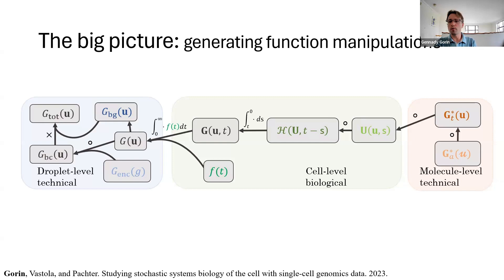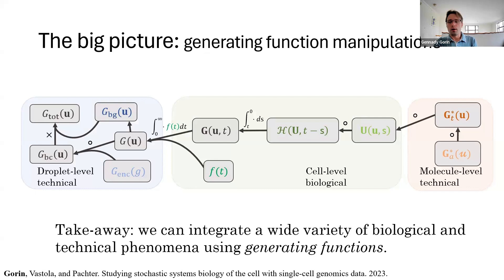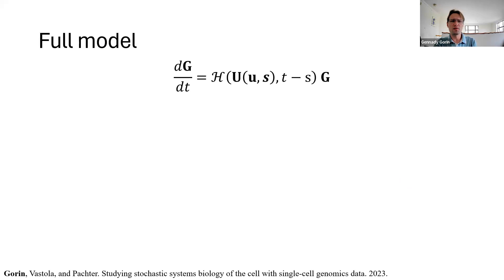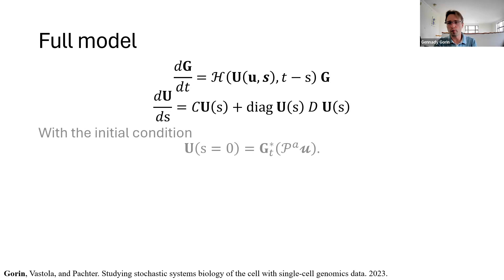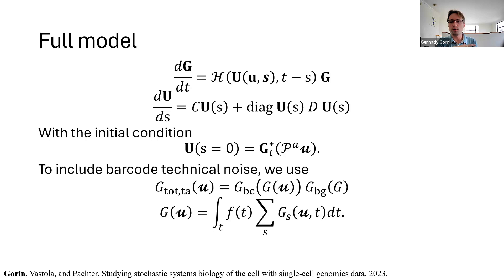Next, we write down the generating function for each independent part of the system and essentially compose and integrate them. This gives us the generating function for the entire system. So this is how it looks quantitatively. We have a system of ordinary differential equations which depend on this function bold-faced h, which is itself the solution to some differential equations with the initial condition that encodes molecule-level technical noise, like the level of dropout. And once we've solved the equation at the very top, we can include barcode, technical noise, and transient phenomena.